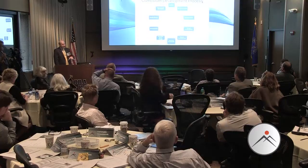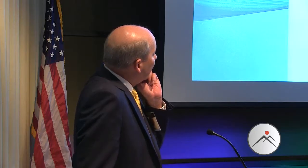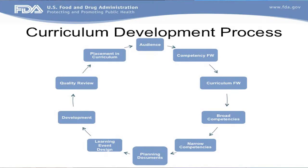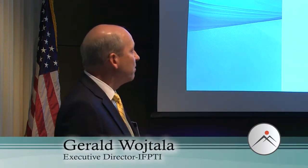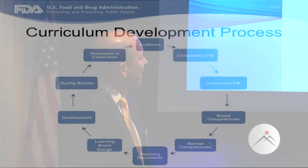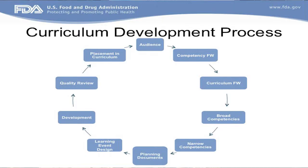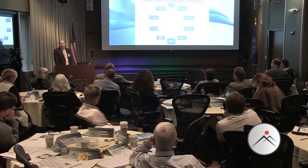Setting aside the performance cycle, DHRD has put together a 10-step process for curriculum development. Looking at what's in the book: audience is the first step, then the competency framework, then the curriculum framework - with examples on the wall. The next steps are identification of broad competencies, then narrower competencies, which in some instances get down almost to the learning objective level.